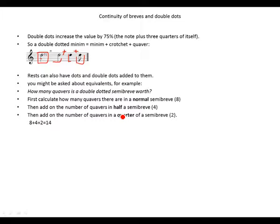Rests can also have dots and double dots added to them. You might be asked about equivalents, for example: how many quavers is a double dotted semibreve worth?